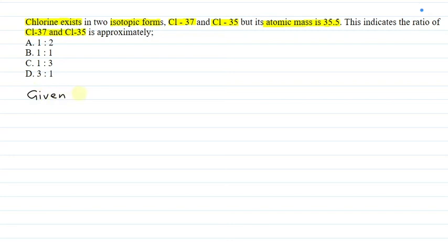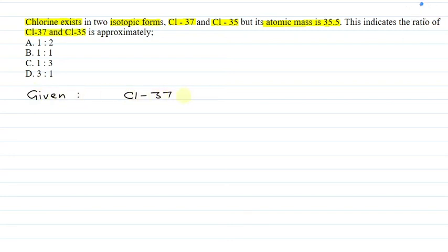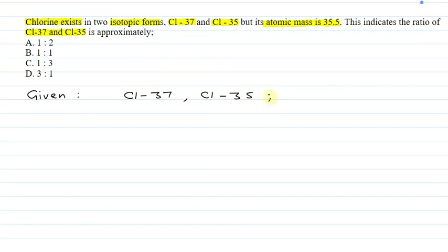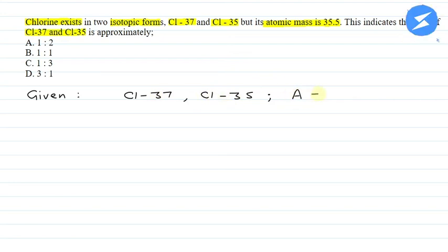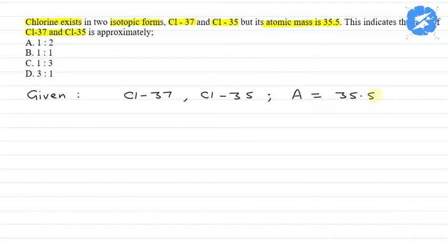We need to explain that chlorine has two isotopes with atomic masses 37 and 35. The average atomic mass of chlorine is given as 35.5.